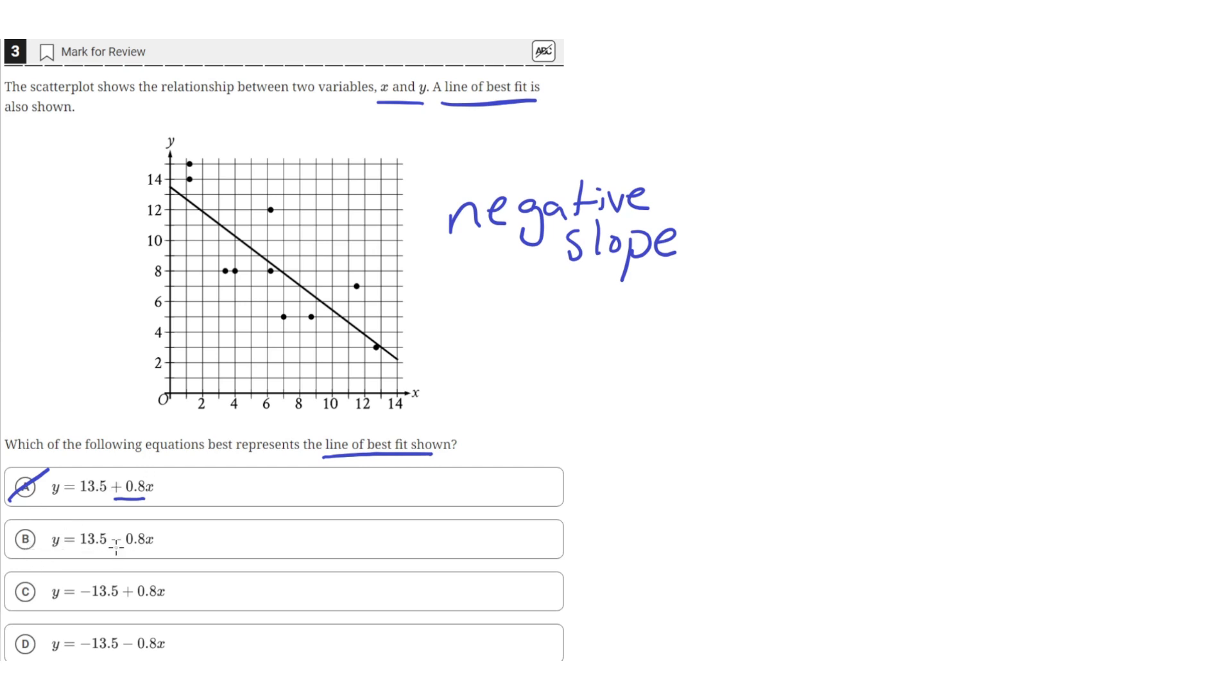B looks good, it has a negative coefficient, which means it has a negative slope. C is wrong because it has a positive coefficient in front of x. So it's saying that the slope of the line is positive, which is wrong. And then D also has a negative slope, so that's good.